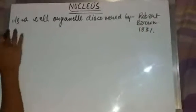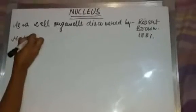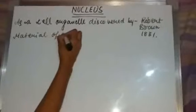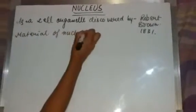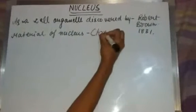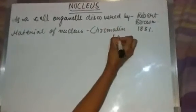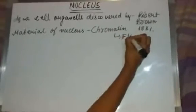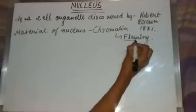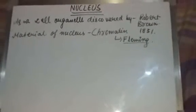Later, the material of the nucleus was identified. The thread-like structure inside the nucleus was called chromatin, a name given by the scientist Fleming.